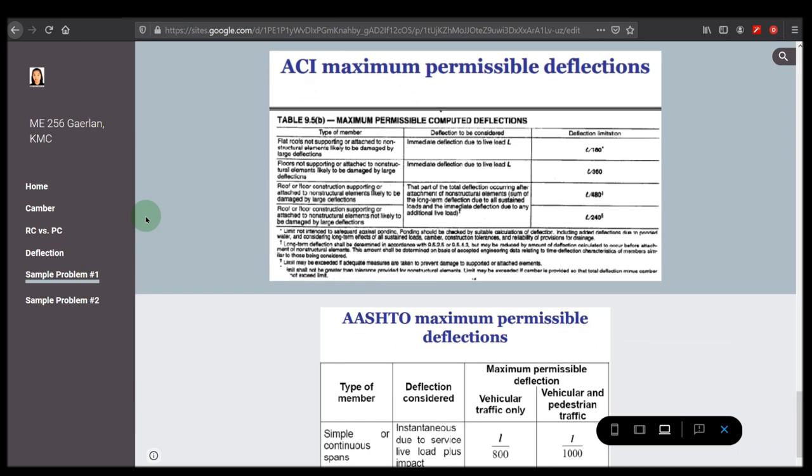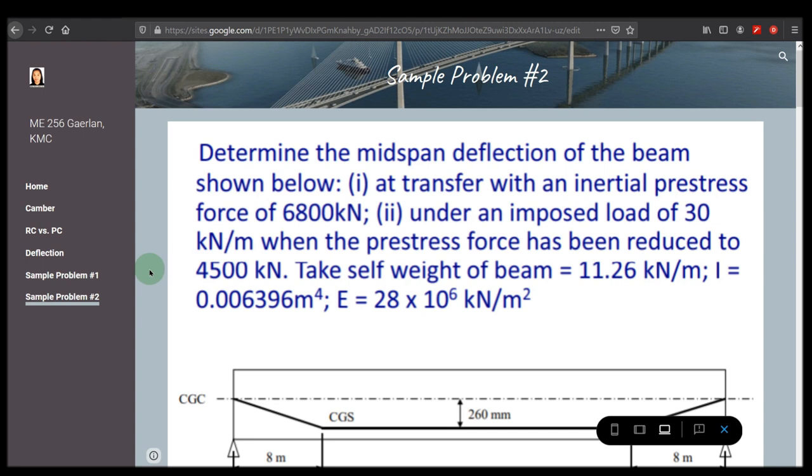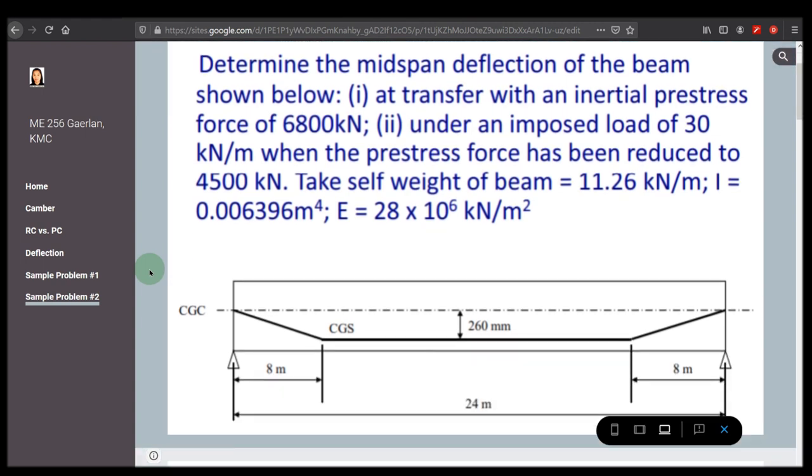For the second problem, we need to determine the mid-span deflection of the beam at transfer with an inertial prestress force of 6,800 kN, then under an imposed load of 30 kN per meter when the prestress force has been reduced to 4,500 kN. Take self-weight of beam = 11.26 kN/m; I = 0.006396m⁴; E = 28 × 10⁶ kN/m².